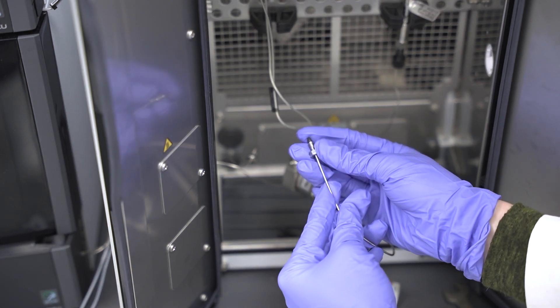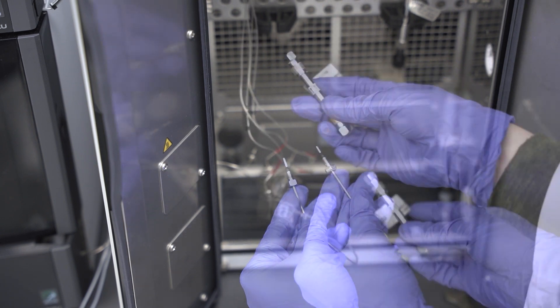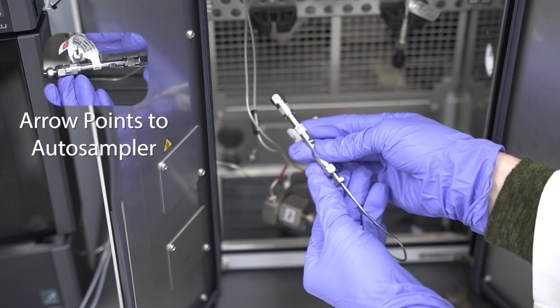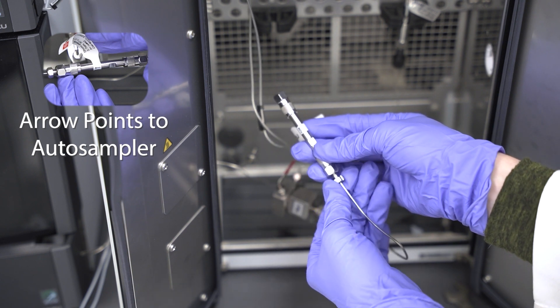The flow direction of the column should match the direction of the solvents used for the LC system. Confirm that the arrow showing the flow direction points towards the auto sampler.